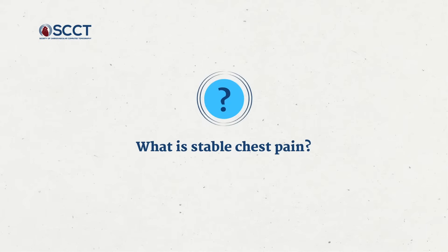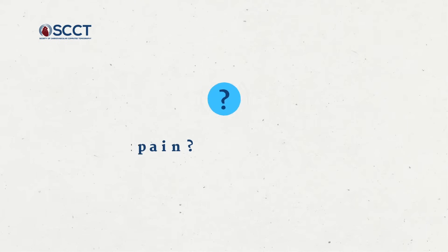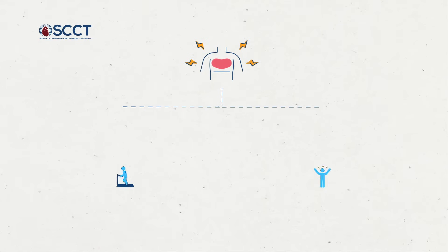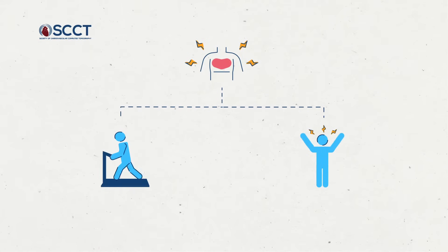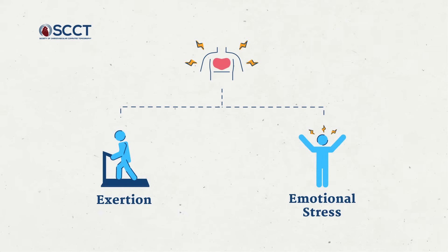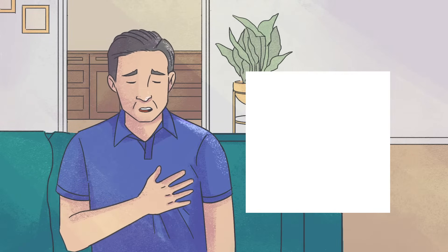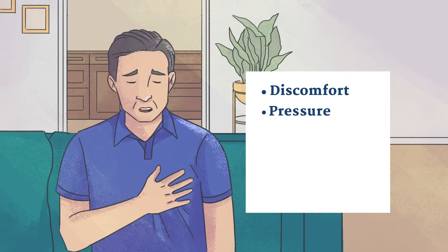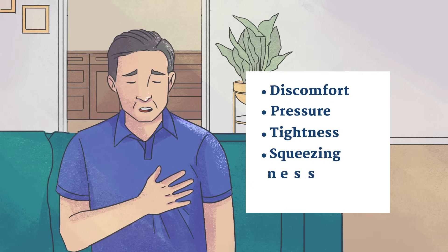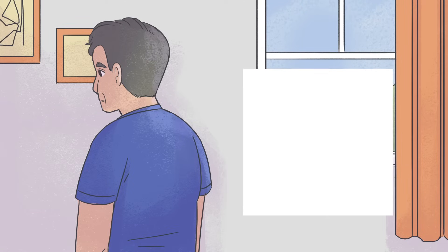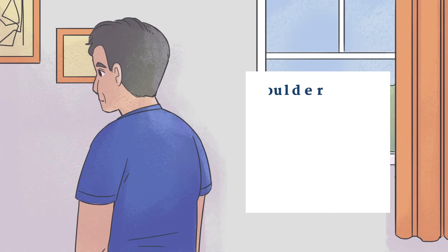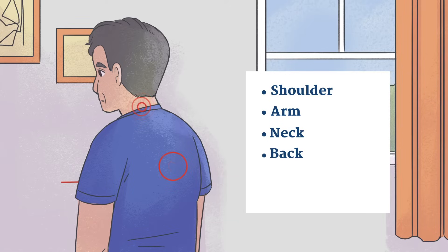What is stable chest pain? Stable chest pain refers to chronic symptoms often associated with consistent precipitants such as exertion or emotional stress. Rather than pain, patients may actually describe discomfort, pressure, tightness, squeezing, heaviness, or burning. It may even be located outside the chest — for example, in the shoulder, arm, neck, back, upper abdomen, or jaw.